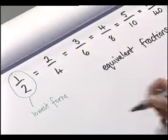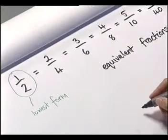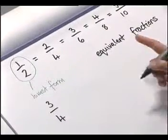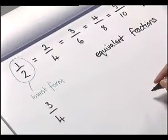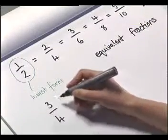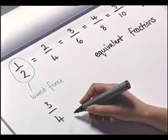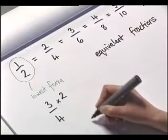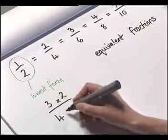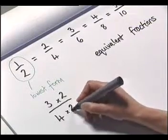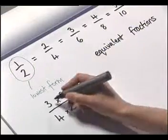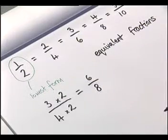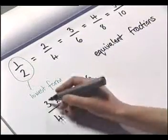So let's have a look first at finding some other equivalent fractions. Let's say I take three quarters — how do I find an equivalent fraction? Well, what I can do is multiply the top number and the bottom number by the same number. So let's say I multiply by two: three times two is six, four times two is eight. So six eighths is a fraction equivalent to three quarters.